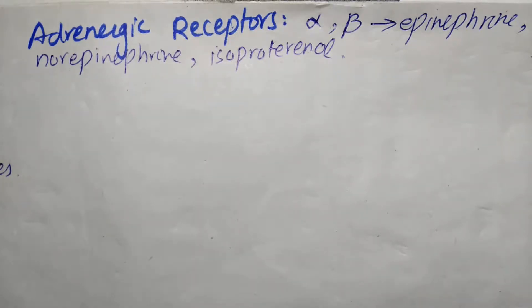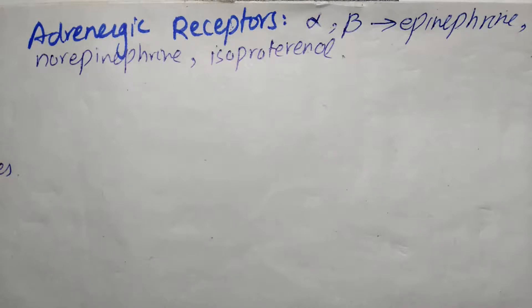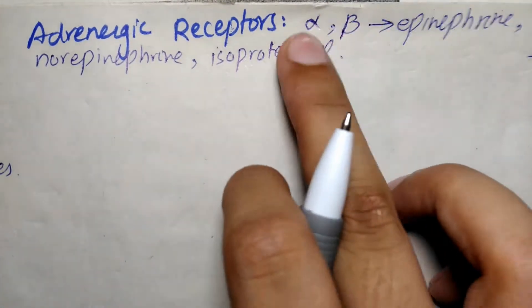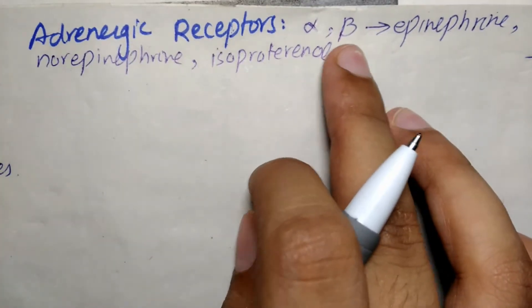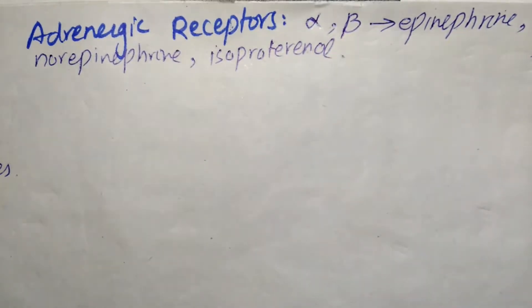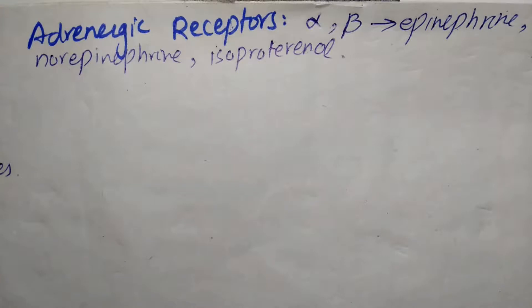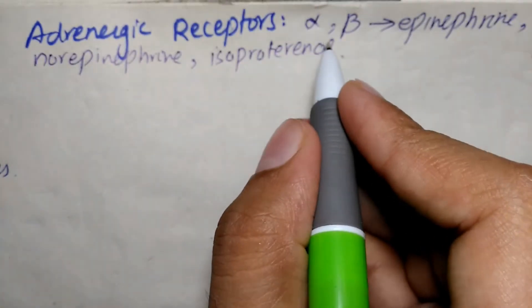These agonists have different affinities for the two types of adrenergic receptors. Each of these main receptor types has a number of specific receptor subtypes that have been identified. Alterations in the primary structure of the receptors influence their affinity for various agents, which is why alpha and beta receptors are further classified into subtypes because of their different affinity for adrenergic agonists.